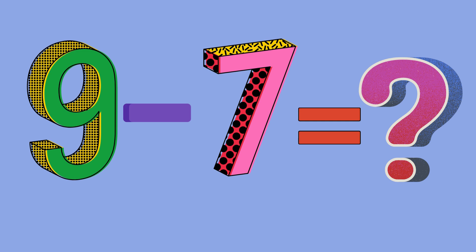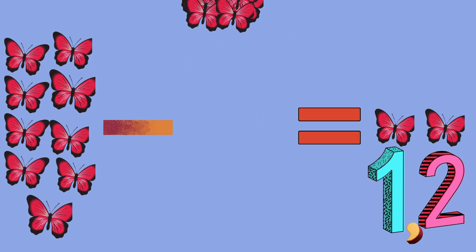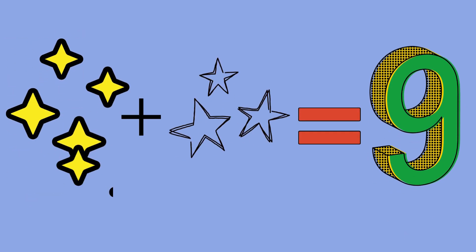Now it's your turn to be the math detective. I'll show you some problems and you solve them. Don't worry if you need to use your fingers. That's perfectly fine. We have nine butterflies and seven of them fly away. How many butterflies do we have remaining? Let's count together. One, two. Problem solved.